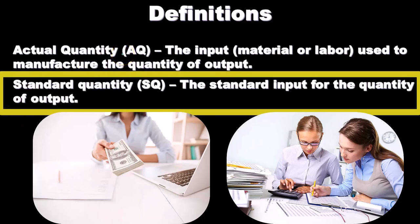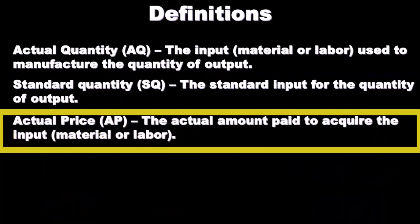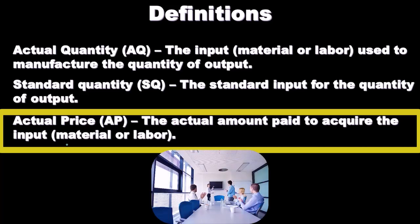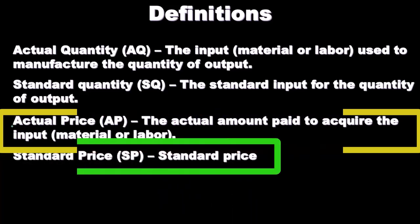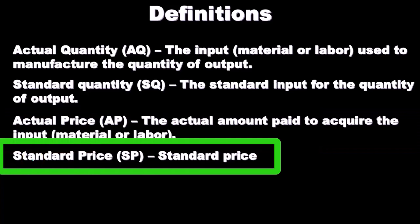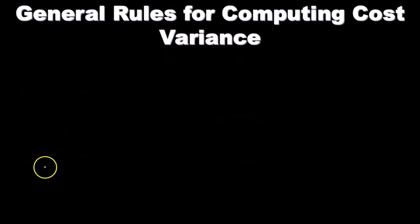We've got the actual — what actually happens — and the standard, kind of like the budget, what we think should happen under normal conditions. The actual price, AP, is the actual amount paid to acquire the input — material or labor. We're considering material price typically per unit, and labor price typically per hour, as an hourly rate. The standard price, SP, is the expected price — the budget price, what we would consider to happen under normal conditions.